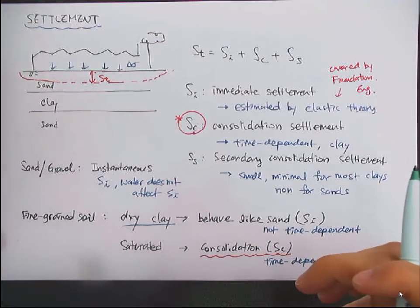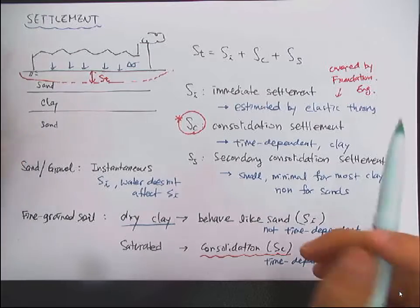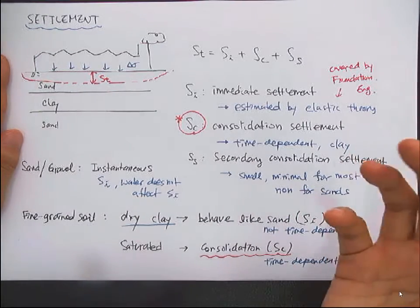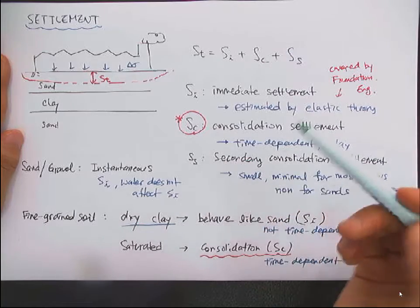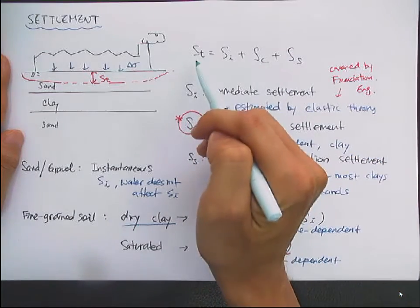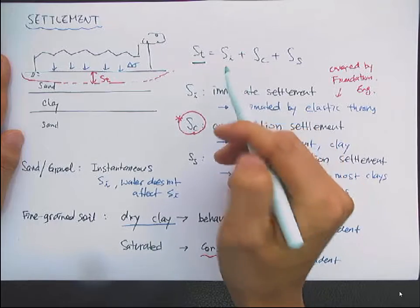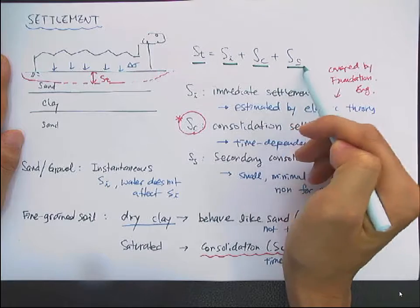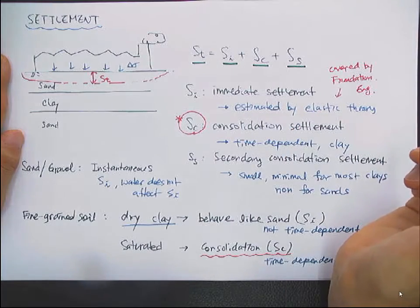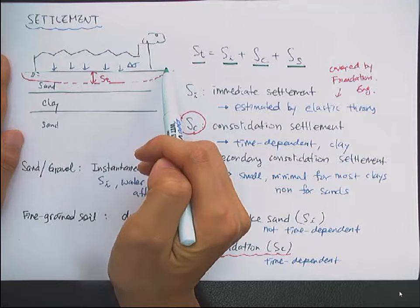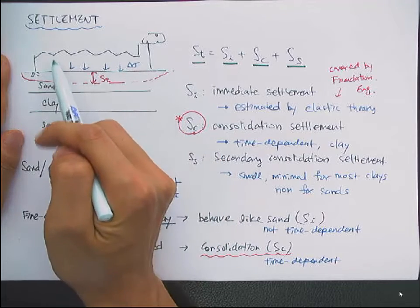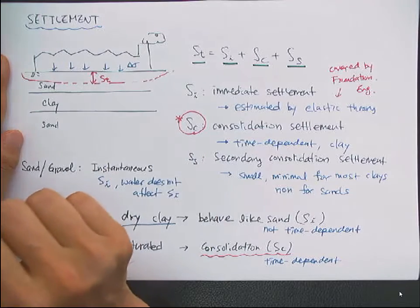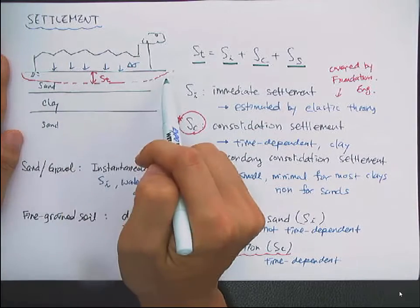Hello everyone. This is the second class on settlement. Today we will talk about how to calculate the settlement. In the last class, we have seen that the total settlement is the summation of immediate settlement, consolidation settlement, and secondary consolidation settlement. So let's say that we have a structure on the ground surface. This structural weight will cause additional stress on the ground surface, and that's going to cause settlement.